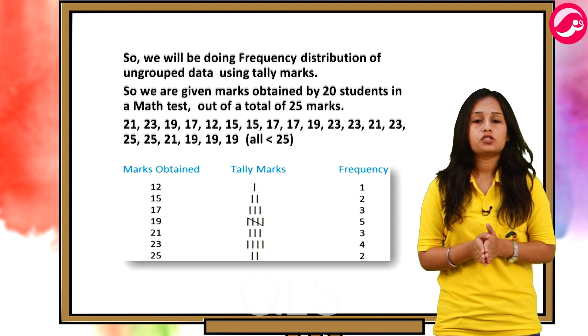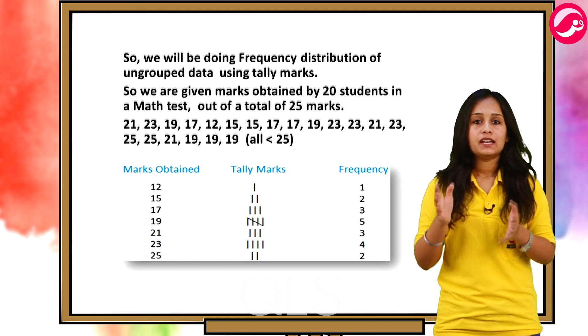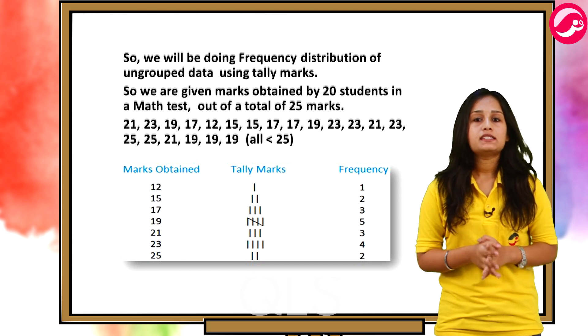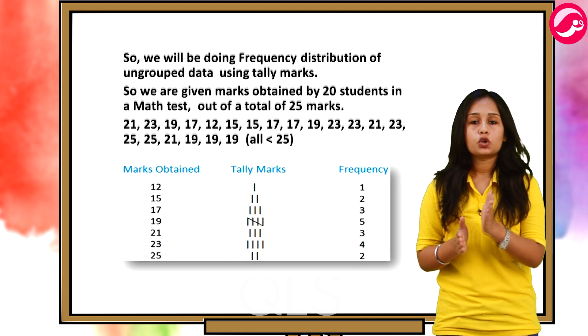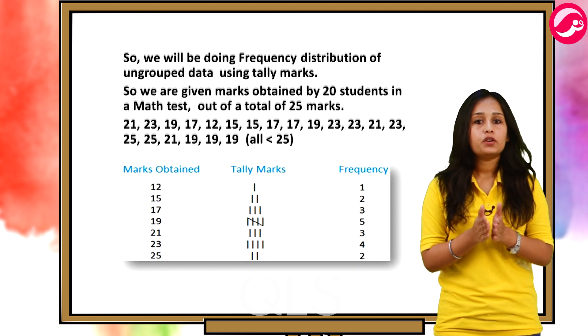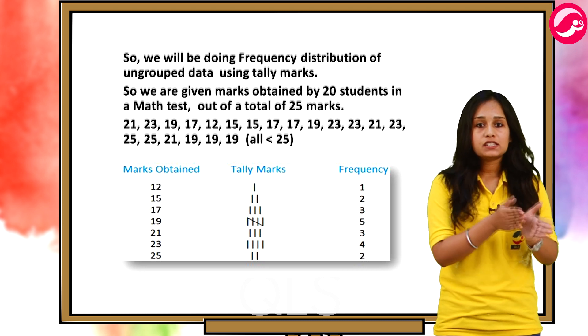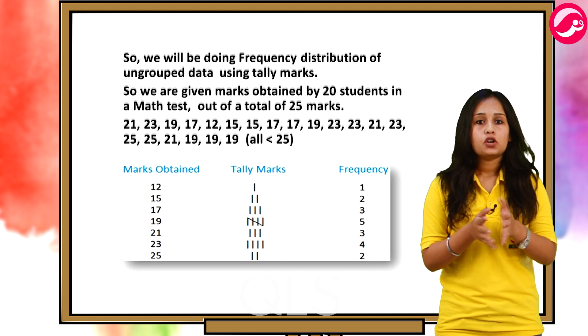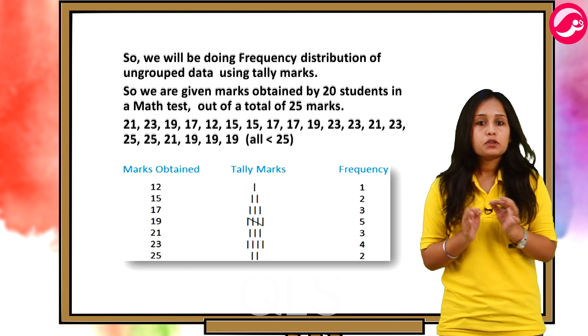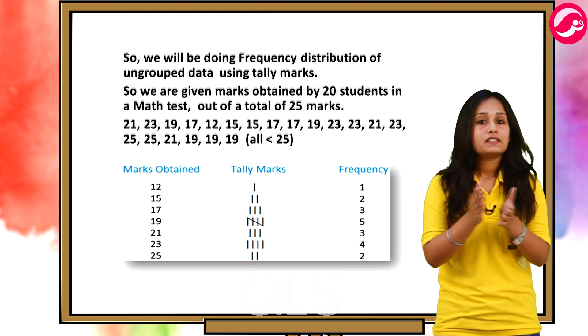So we will be doing frequency distribution of ungrouped data using tally marks. So we are given marks obtained by 20 students in a math test out of a total of 25 marks. So as you can see in the table, we have written the individual marks obtained by students and then we have written how many students scored that much marks. For example, one student scored 12 marks, two students scored 15 marks, three students scored 17 marks and so on. And also, we have written respective tally marks. Now, here you can see the individual marks obtained in the first column. So, here our data is ungrouped. It is kind of scattered.